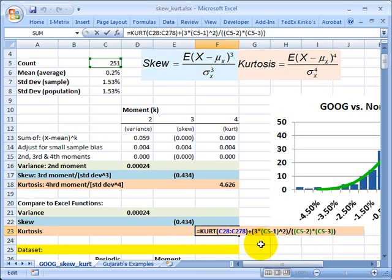So I have to add the 3 back, and just for the fact that Excel is calculating a sample kurtosis. And I get back to 4.626, pretty close to the same.